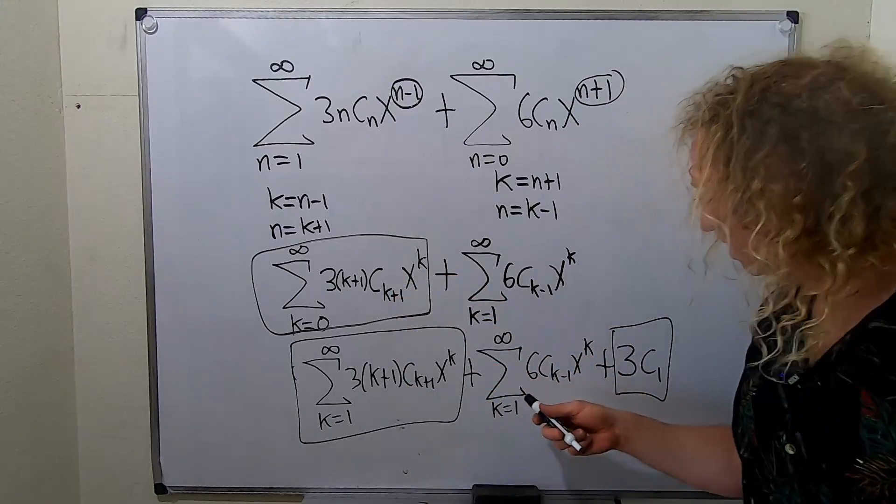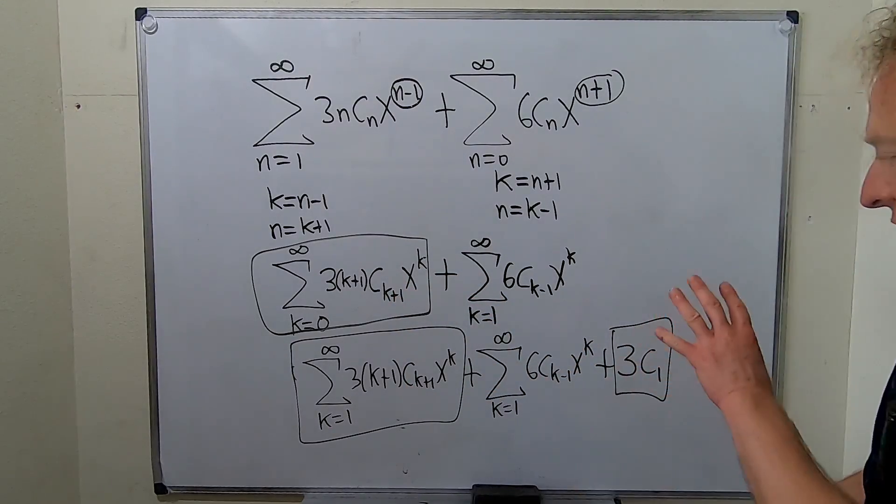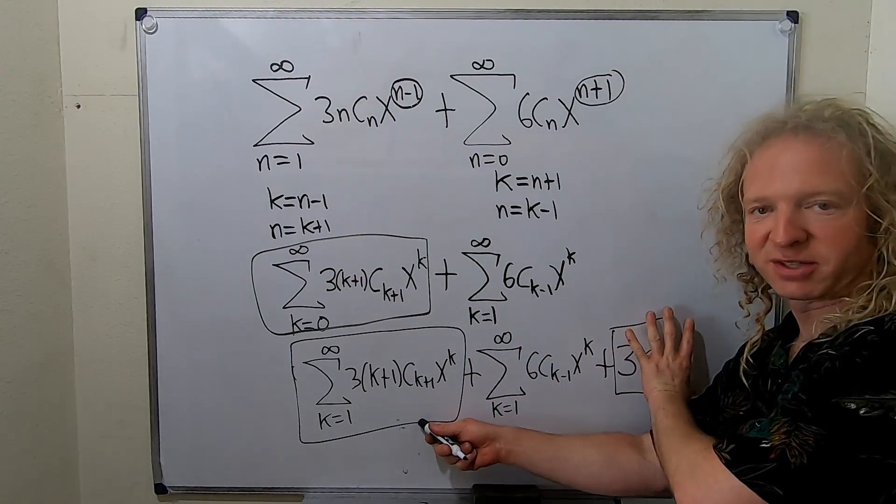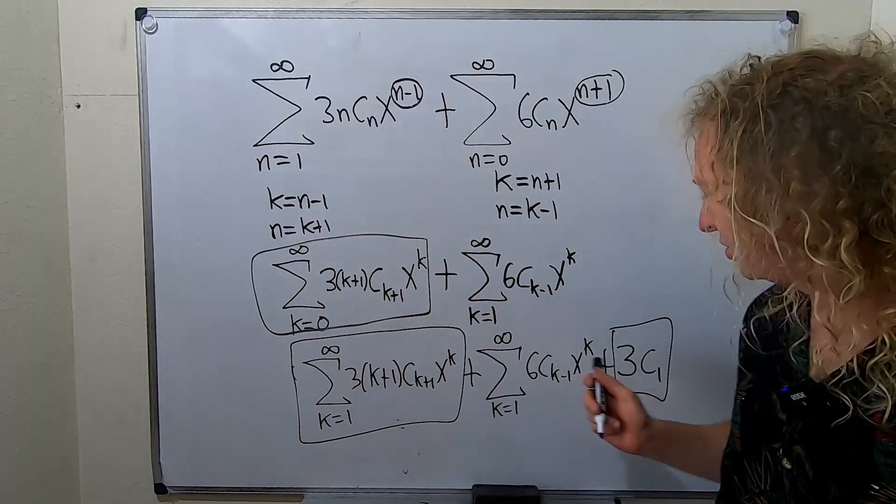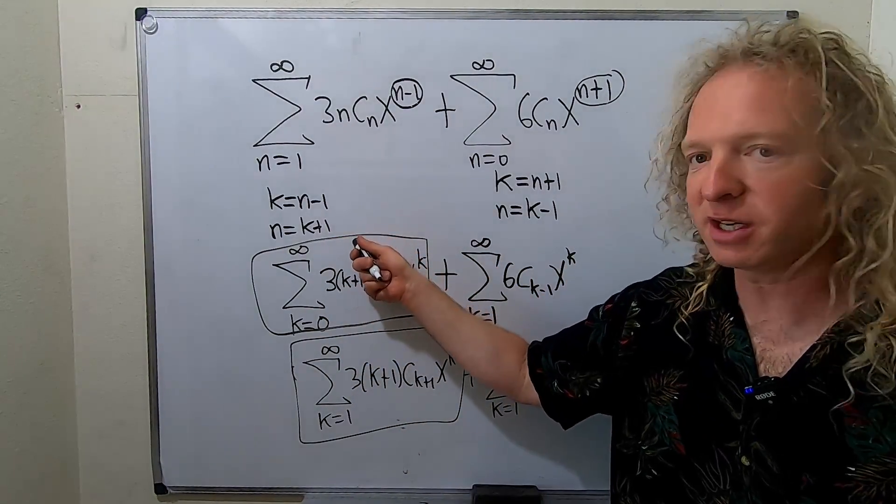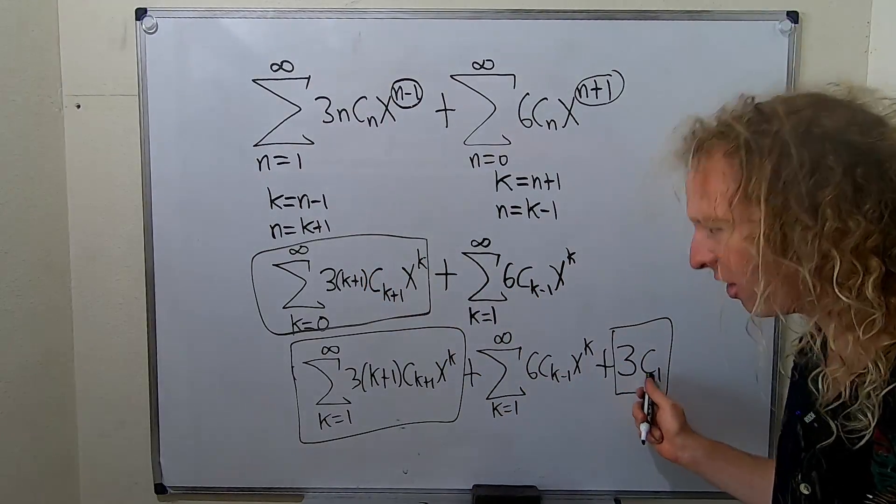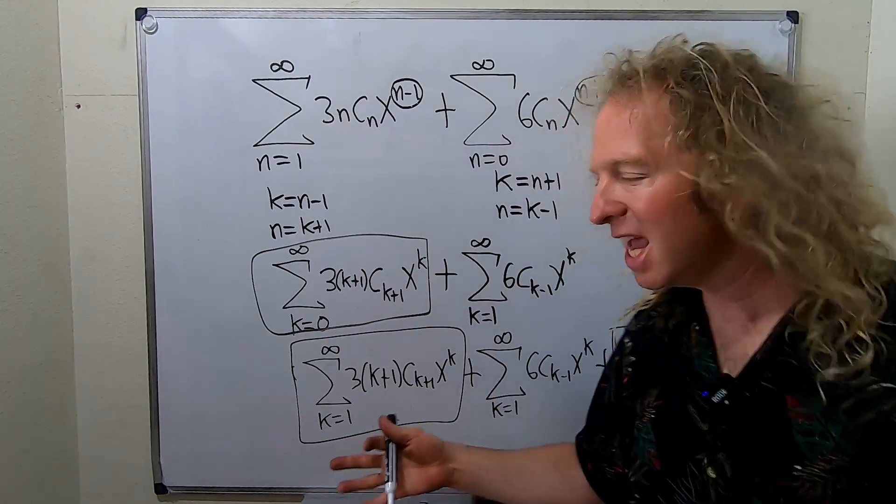These two are the same as this. Because this is the sum from 0. This is the 0th term. And this is the rest of them. So this is all of them. This is 0 to infinity. This is 0, and then it's 1 to infinity. So 0 to infinity is the same thing as 0 and then 1 to infinity.